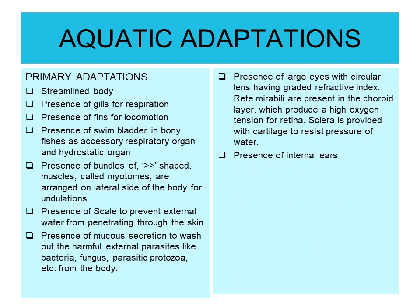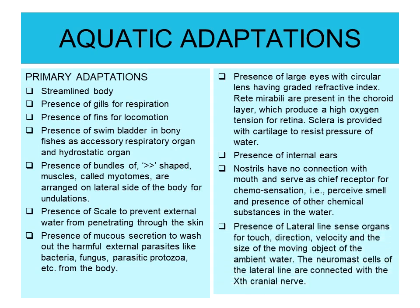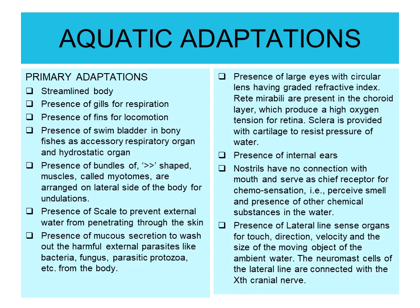Presence of internal ears. Nostrils have no connection with the mouth and serve as the chief receptor for chemosensation — that is, they perceive smell and the presence of other chemical substances in the water. Next is the presence of lateral line sense organs for touch, direction, velocity, and the size of moving objects in the ambient water.